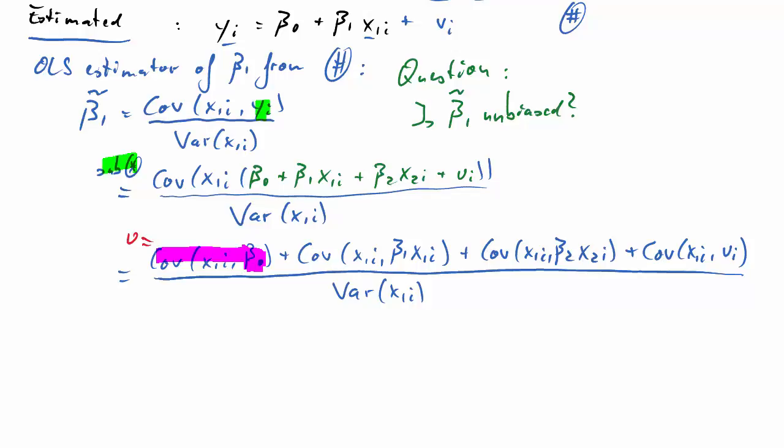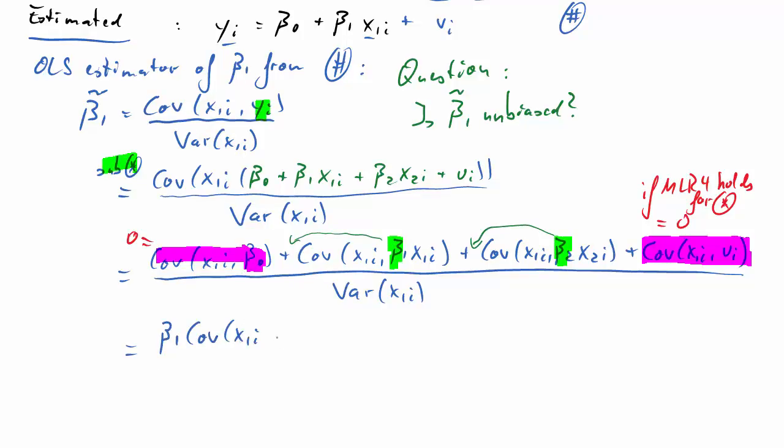The first one involves the beta 0 term. Beta 0 is just an unknown coefficient but a constant, not a random variable. Therefore, the covariance between the random variable x1 and beta 0 is 0. What about covariance between x1 and ui? If our multiple linear regression model assumption 4 holds, this will be 0, and we shall assume that assumptions 1 to 4 hold for the correct model. In the two middle terms, we have these constants, beta 1 and beta 2, and they can be brought out of the covariance because they are fixed but unknown values.